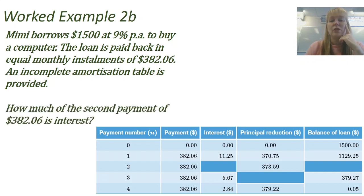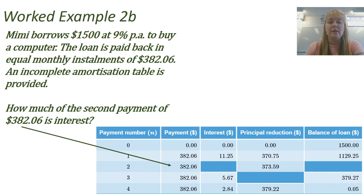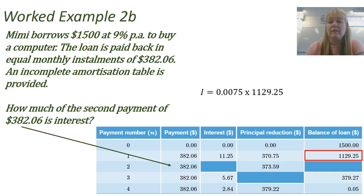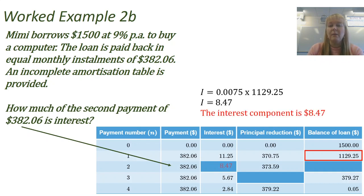The next question (2B) asks how much of the second payment is made up of interest. We find payment number two in the table and look at the loan balance before that payment. Multiplying 0.0075 (the monthly rate from 2A) by the balance gives $8.47. So $8.47 of the second payment is interest.